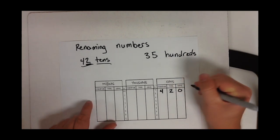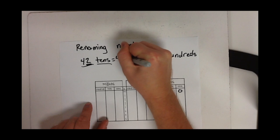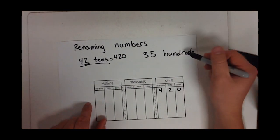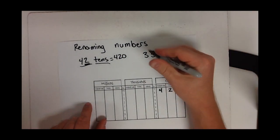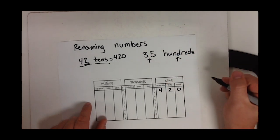You can just add that zero on the end. So 42 tens equals 420. We can do the same thing with hundreds. So 35 hundreds - this is the number, this is the place value - so we're going to the hundreds place value.